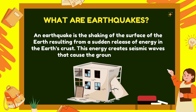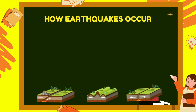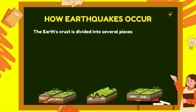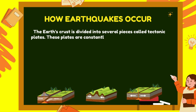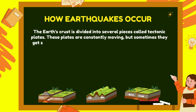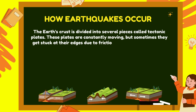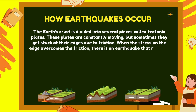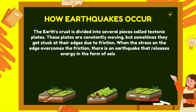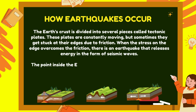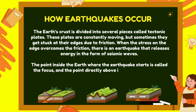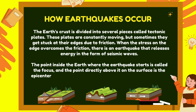This energy creates seismic waves that cause the ground to shake. The earth's crust is divided into several pieces called tectonic plates. These plates are constantly moving, but sometimes they get stuck at their edges due to friction. When the stress on the edge overcomes the friction, an earthquake occurs, releasing energy in the form of seismic waves. The point inside the earth where the earthquake starts is called the focus, and the point directly above it on the surface is the epicenter.